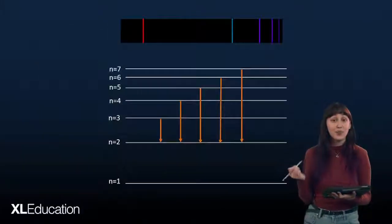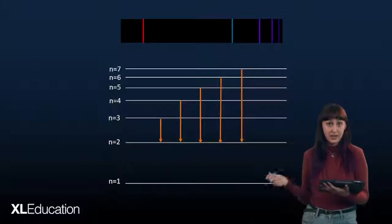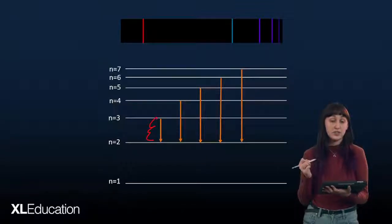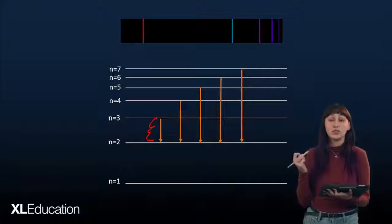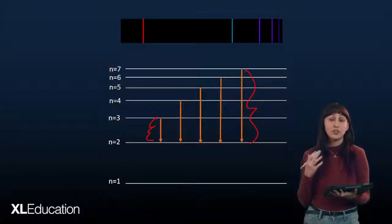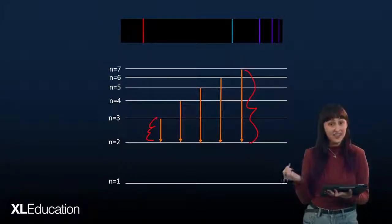We can work out which transition causes each of these colors. So here, this is the smallest transition, which will be associated with a photon with the lowest energy and the lowest frequency. And here, this is the largest transition, which will be associated with the photon with the largest energy and the highest frequency.